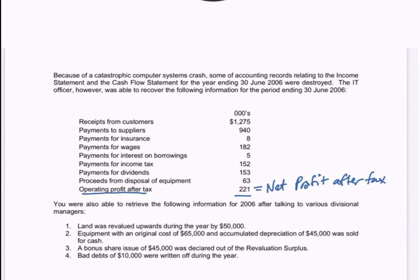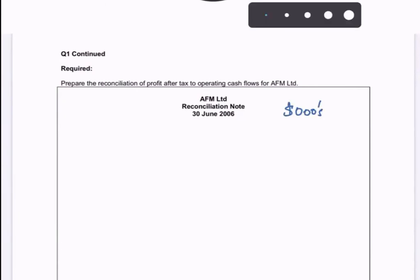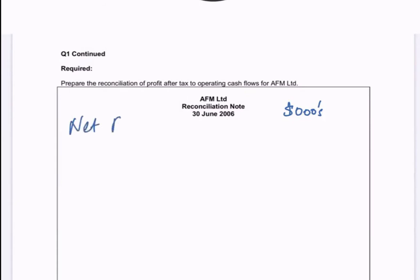So let's set up our reconciliation note. Everything's going to be in thousands. We put in net profit after tax of 221.